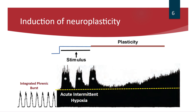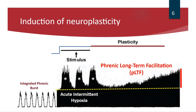After the third hypoxic episode, we return the rat to baseline conditions and record phrenic nerve output for 60 to 90 minutes. There is a progressive increase in the amplitude of the phrenic nerve signal over time. The difference between baseline amplitude and the amplitude at 60 minutes is an indicator of the magnitude of neuroplasticity in this system. This has a specific name — it's called long-term facilitation, and because we're recording from the phrenic nerve, it's called phrenic long-term facilitation.